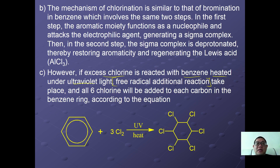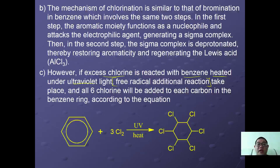However, if excess chlorine is reacted with benzene under heat and ultraviolet light, a free radical addition reaction takes place. All the pi bonds react with chlorine molecules via addition reaction to form 1,2,3,4,5,6-hexachlorocyclohexane. This is a side reaction. This concludes the halogenation of benzene.